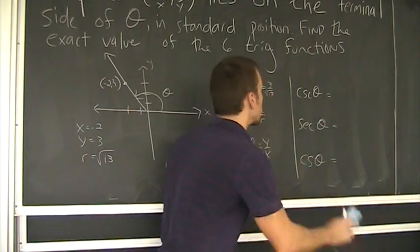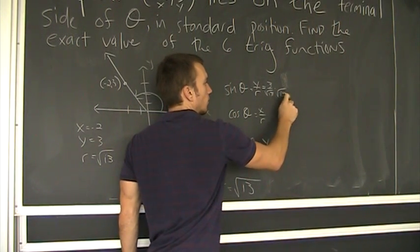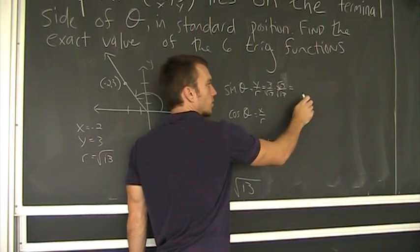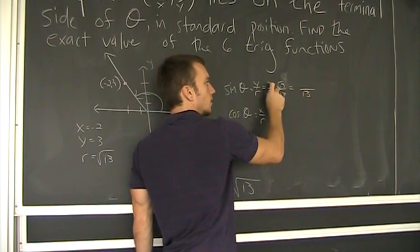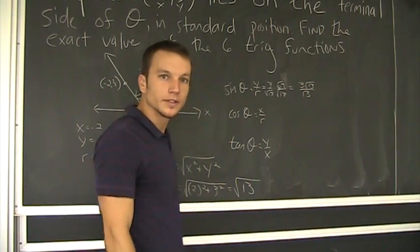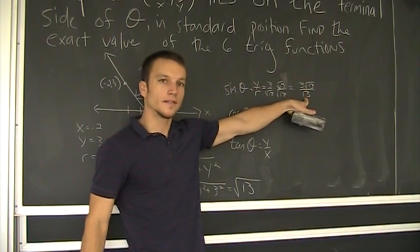Alright? So, in order to rationalize, I need a little more room. I got to multiply root 13 over root 13. Root 13 times root 13 is 13. 3 root 13 is just 3 times root 13. Okay? That's the sine of theta.